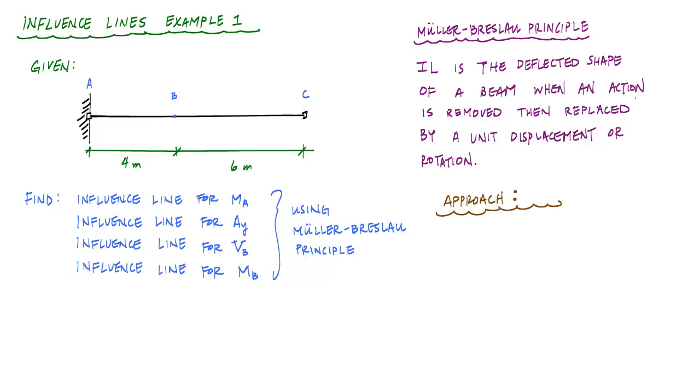So the approach I try to take when I solve these influence lines problems using the Mueller-Bresslaw principle is to first draw the structure undeformed with the action removed. So essentially what you're doing is releasing the restraint and drawing the structure. Next, you're going to apply a unit displacement or rotation, depending on whether you're removing a force or a moment, and draw that deflected shape associated with that unit displacement or rotation.